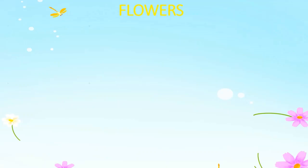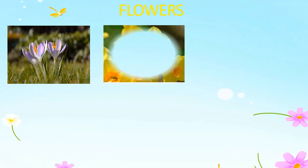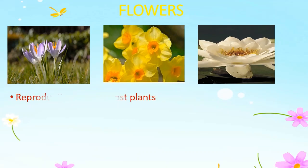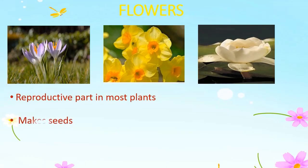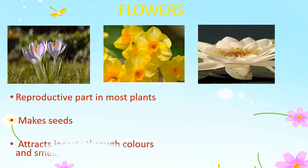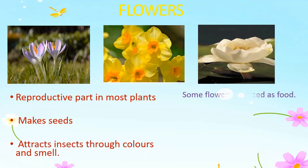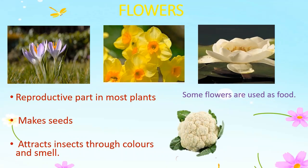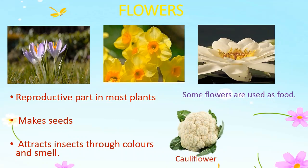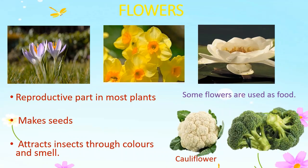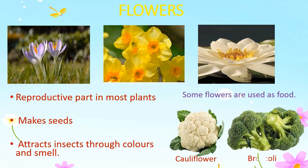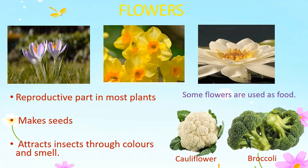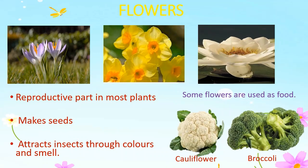Flowers are the most attractive part of a plant. Flowers are the reproductive part of a plant — they are responsible for producing fruits and seeds. Flowers attract insects through their attractive colors and fragrance. Some flowers are used as food, such as cauliflower and broccoli. Flowers are mainly used for making perfumes, as decoration, and for making garlands.